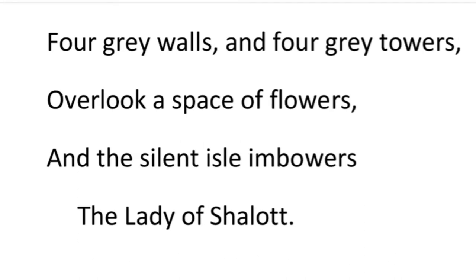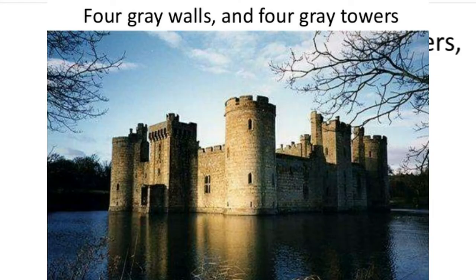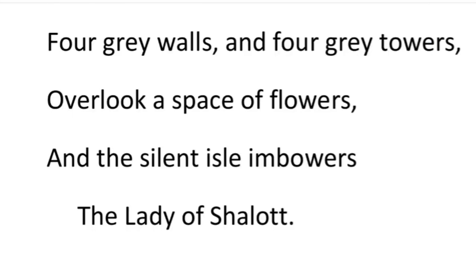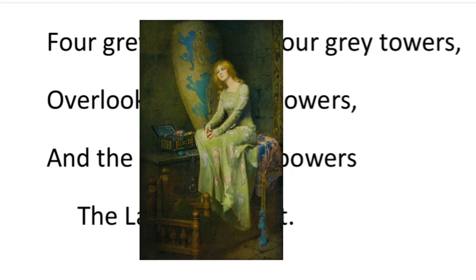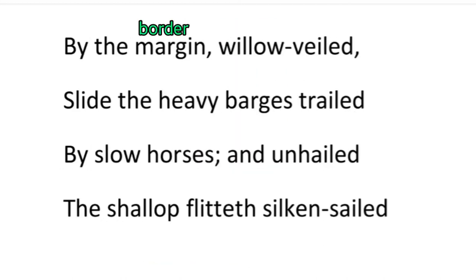Here the poet talks about four gray walls and four great towers — these are like a mini castle found on the island. The island is also surrounded by beautiful flowers. But the strange thing is that it embowers or imprisons the Lady of Shalott — a woman whose name is unknown but who is often referred to as the Lady of Shalott.